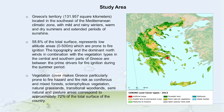The study area is the Greece territory, which is about 132,000 square kilometers and is located in the southeast of the Mediterranean climatic zone. About 60% of the total surface represents low altitude areas, up to 500 meters, which are prone to fire ignition. The topography and the dominant north winds in the central and southern part of Greece, in combination with vegetation types, are among the prime drivers for fire ignition during the summer period. Vegetation types that favor fire include coniferous and mixed forests, sclerophilous vegetation, natural grasslands and transitional woodlands, corresponding to approximately 72% of the total surface of the country.